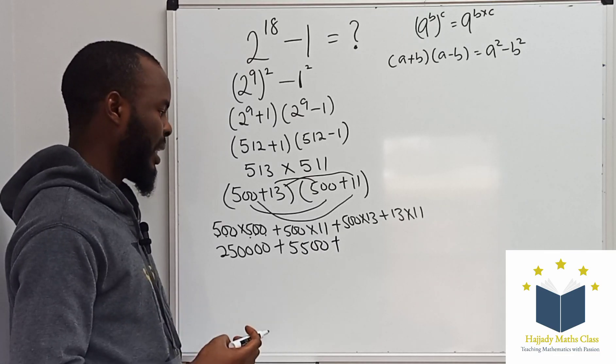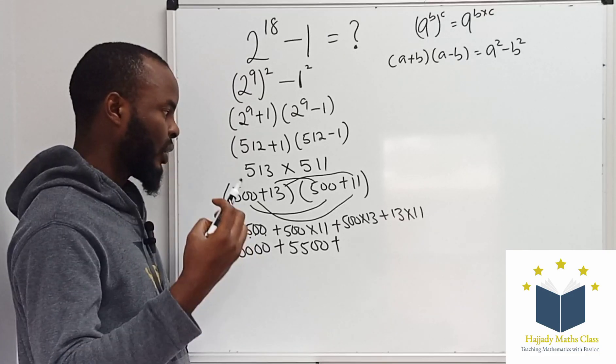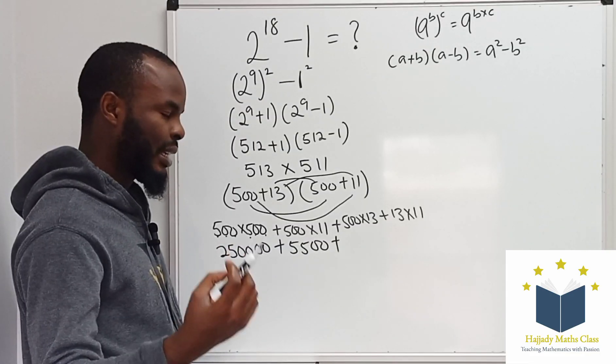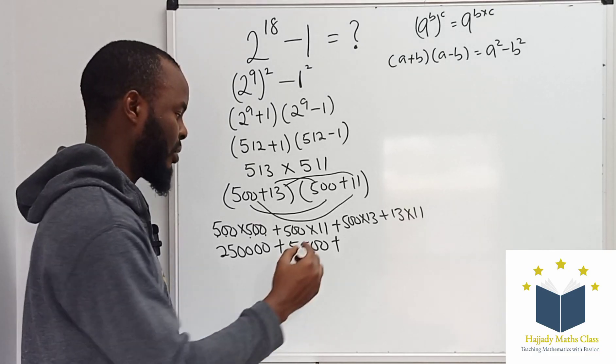Plus 500 multiplied by 13: this is like 13 times 1,000, which is 13,000. Half of 13,000 is 6,500.